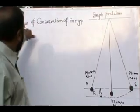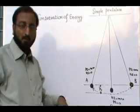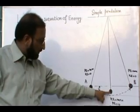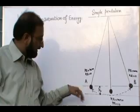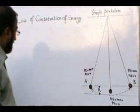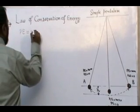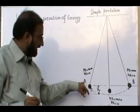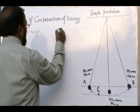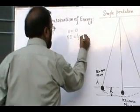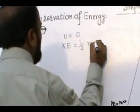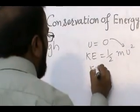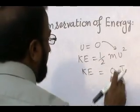For example, to demonstrate the conservation of energy, consider a simple pendulum. We displace the bob of the simple pendulum from position O to A. Now at point A, its height is h, so its potential energy PE is equal to mgh. While velocity at the extreme position, that is at point A, will be equal to zero, so kinetic energy at point A is equal to half mv squared. When we put the value of v into this equation, we get KE equal to zero joules.